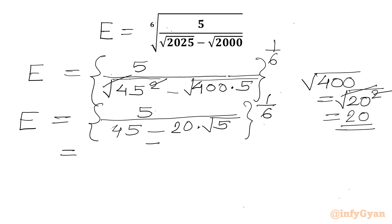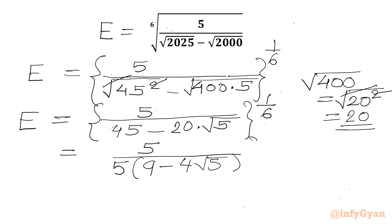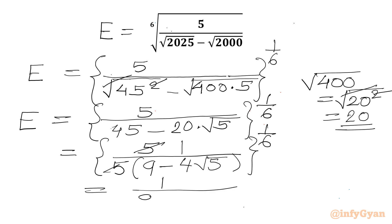So E becomes 5 over 45 minus 20 times square root 5, all to the power 1 over 6. Now 5 is common in the denominator, so in the bracket we write 9 minus 4 root 5. The 5 in the numerator and the 5 factored out cancel, giving E equal to 1 over 9 minus 4 root 5, whole to the power 1 over 6.